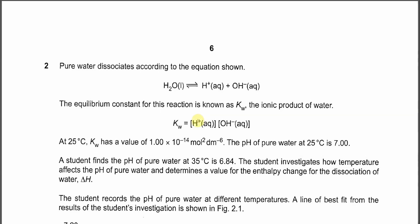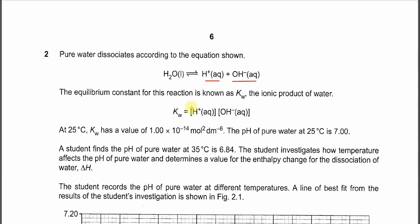Question 2. Pure water dissociates according to this equation to form the hydrogen ion and hydroxide. The equilibrium constant for this reaction, known as Kw or the ionic product of water, is equal to the concentration of hydrogen ion multiplied by the concentration of hydroxide ion.